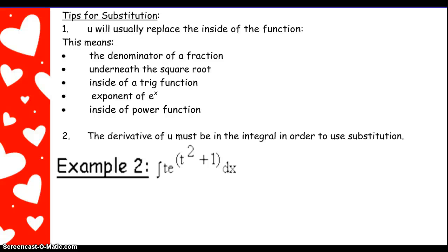So as I look at example 2, yucky, there's stuff going on, what to do. I look for what is up inside the exponent, and I'm going to call that u. So t squared plus 1. Take the derivative. du equals 2t dt. So here we go.